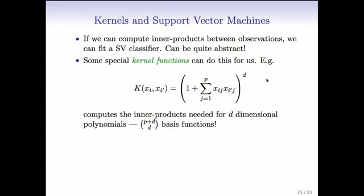But more importantly, there's some special kernel functions. So a kernel function is a function of two arguments, in this case two p-vectors. Right. So it's called a bivariate function. And these kernels compute the inner products for us. And you might not even know what the feature space is in which they compute the inner product, but they can be thought of as doing that.